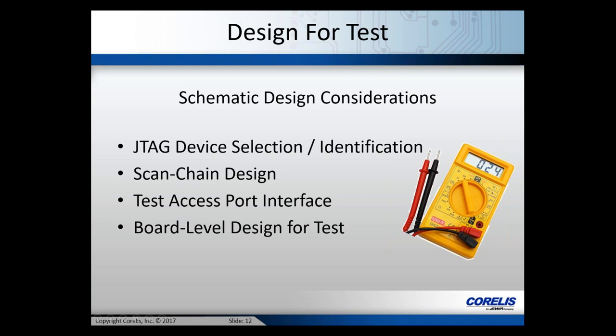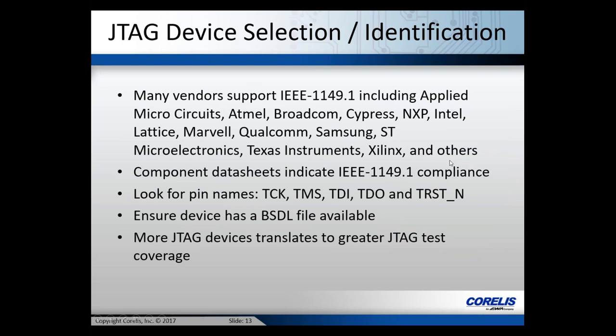The first area of schematic design considerations covers four topics: JTAG device selection, scan chain design, TAP access port interface, and board-level design for test. When selecting devices, many vendors already support the IEEE 1149.1 standard, which has been around since 1990. It's a very mature standard, and problems faced in the early years are no longer issues today.